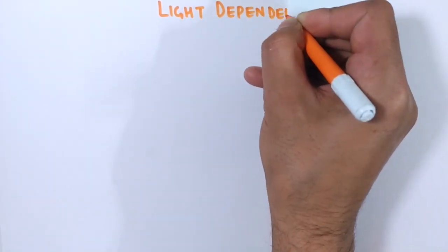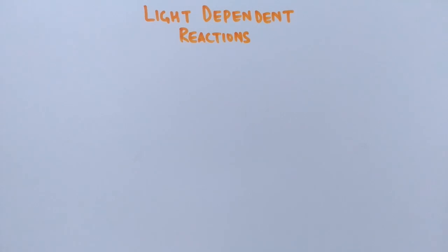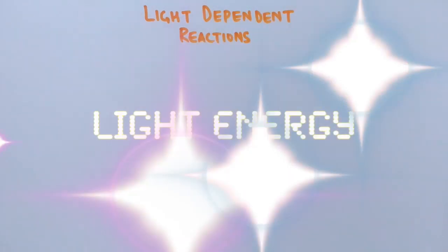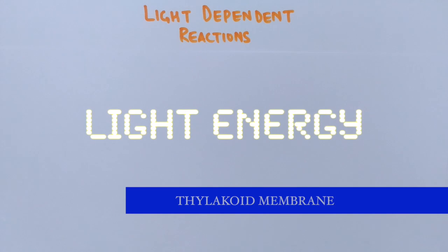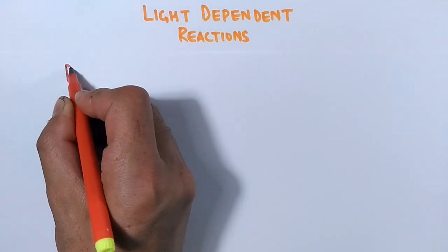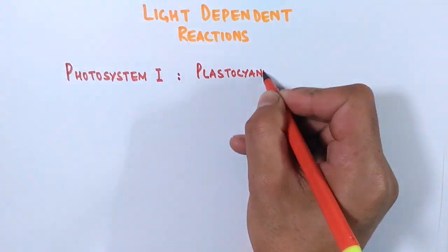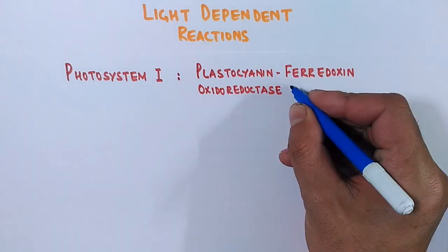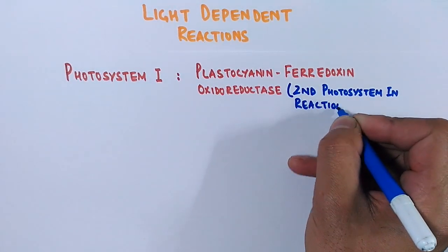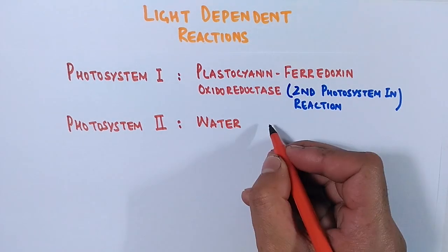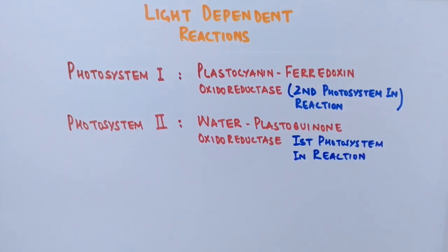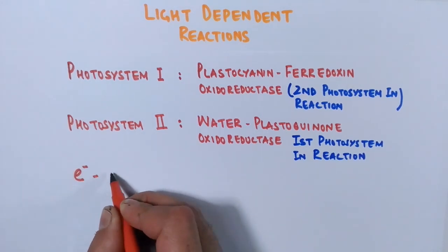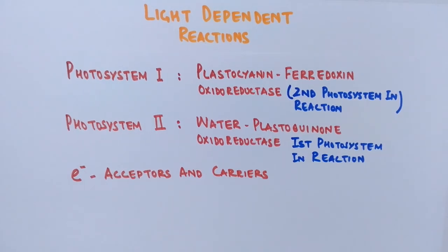Now for a brief overview of light-dependent reactions — called so because they require light energy to occur. These reactions take place in thylakoid membranes and involve different protein molecules. The major ones are Photosystem I (plastocyanin-ferredoxin oxidoreductase), which was the first photosystem discovered, and Photosystem II (water-plastocyanin oxidoreductase), which is actually first in the reaction order but was the second photosystem discovered. There are also electron acceptors and electron carriers that drive the electron transport chain.